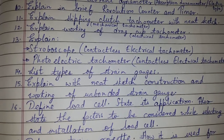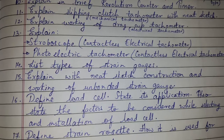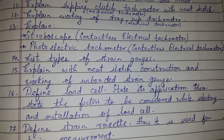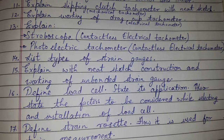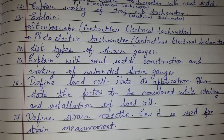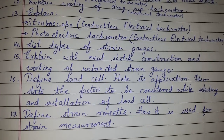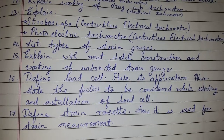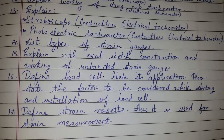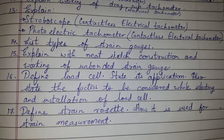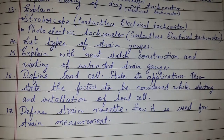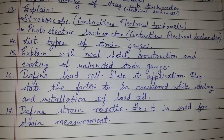List types of strain gauges. Explain with neat sketch the construction and working of unbounded strain gauge. Define load cell and state its applications. Also state the factors to be considered while selecting and installing a load cell. Define strain rosette and explain how it is used for strain measurement.